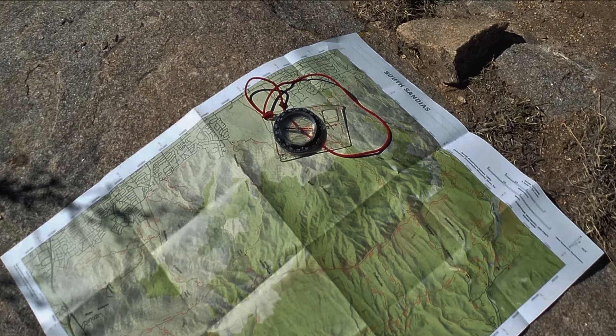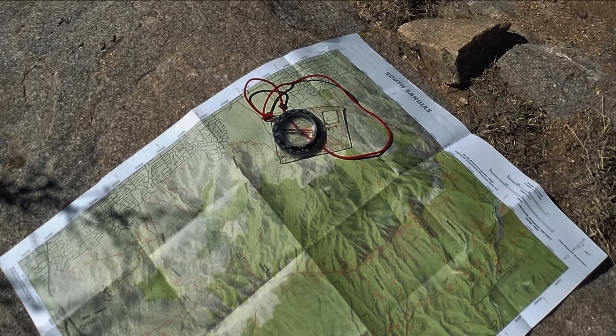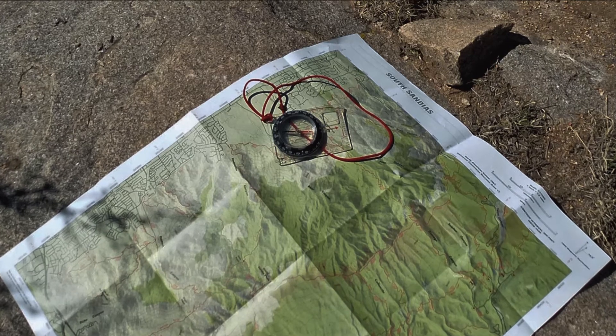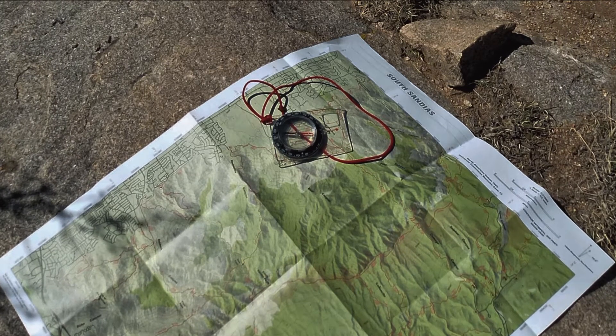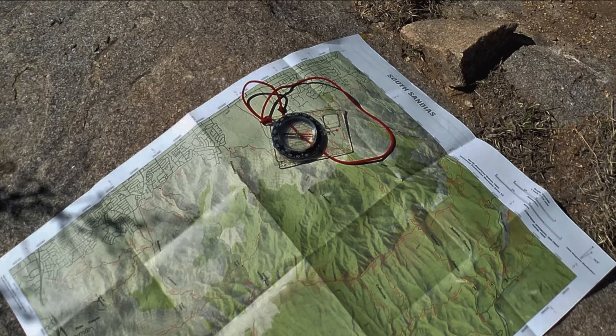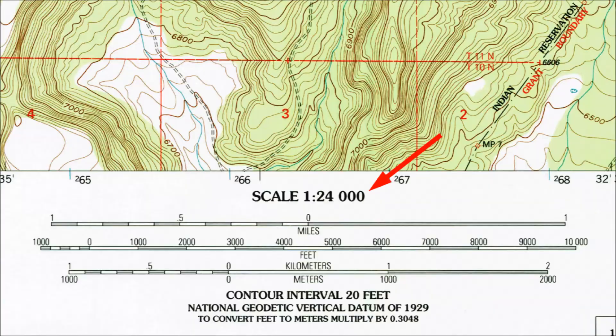Let's start by supposing that on your map two places are three inches apart. How far do you need to hike in the real world to get from one place to the next? Most paper topo maps include a statement of scale, which is the ratio of distances on your map to distances in the real world. Back when all maps were paper maps, the most detailed topo maps issued by the US government were usually at a scale of 1 to 24,000.